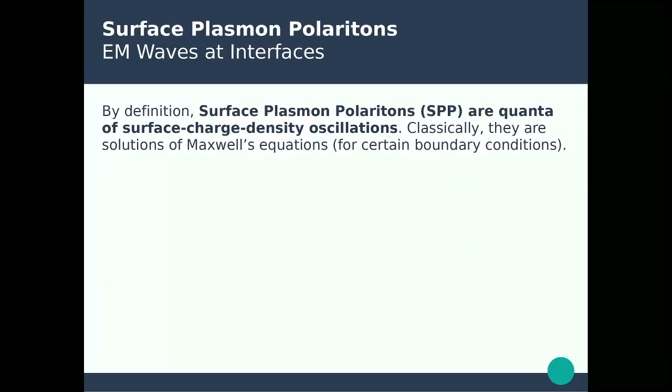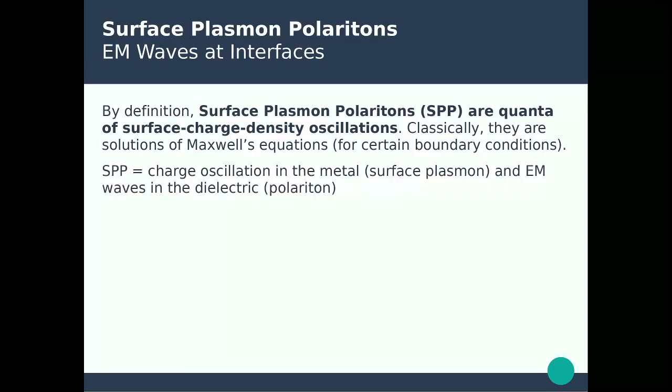Surface plasmon polaritons, or SPPs, are quanta of surface charge density oscillations. Classically, they are just solutions of Maxwell's equations that can be calculated for certain boundary conditions. SPPs are a combination of charge oscillation — that's the surface plasmon part — and electromagnetic waves in a dielectric medium — that's the polaritonic part of the SPP term.